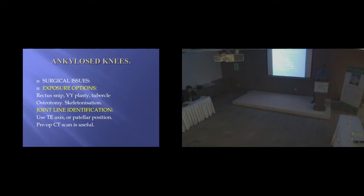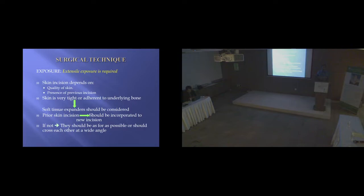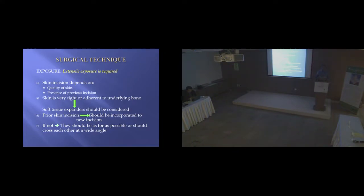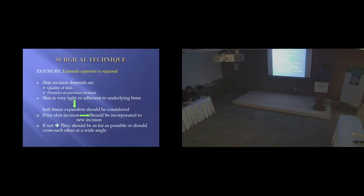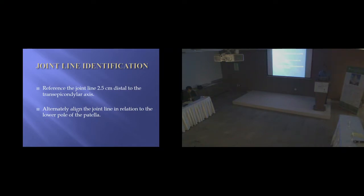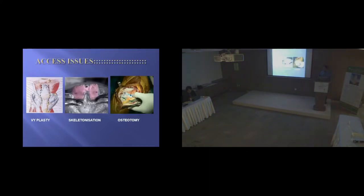For identifying joint lines, use the transverse axis of the patellar position, and preoperative use of a CT scan is very useful. If the knee has multiple scars, use the lateralmost incision. For a very tight adherent knee, use plastic surgery colleagues with tissue expanders to get good skin — the worst outcome is struggling to implant only to find the skin has broken down. The most consistent joint line is 2.5 to 3 centimeters distal to the trans-epicondylar axis or in relation to the patellar tendon.